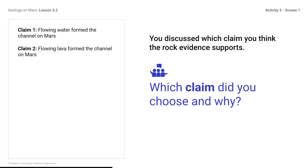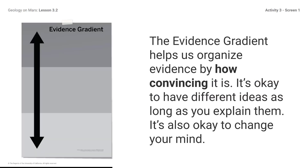The rock evidence on evidence card F supports the flowing water claim. The rock in the image is conglomerate. Conglomerate is a type of rock found near channels formed by flowing water. The evidence gradient helps us organize evidence by how convincing it is. It is okay to have different ideas as long as you explain them.